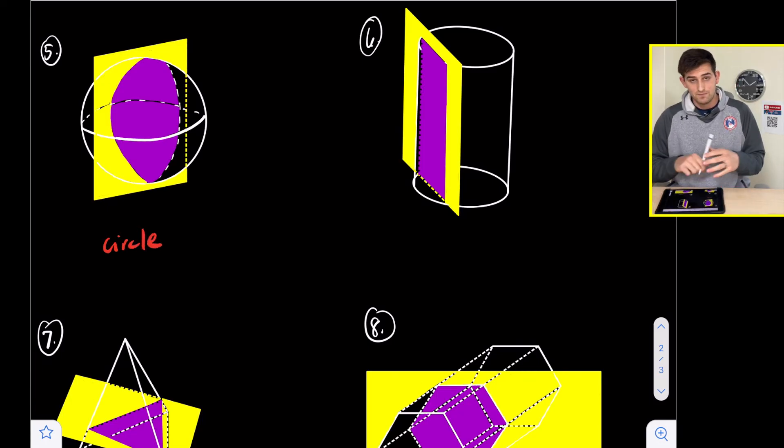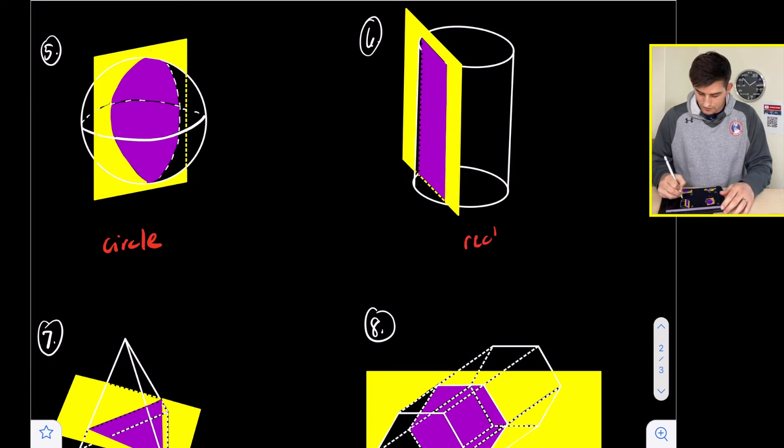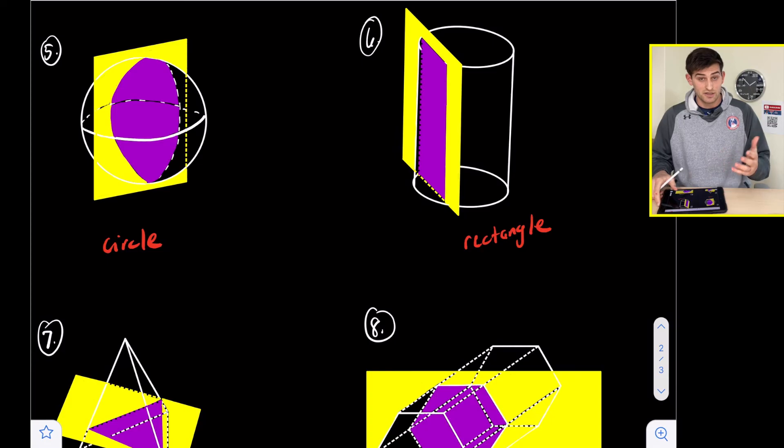Number six, we're starting with a cylinder, and we are slicing off an edge. So our cross section here is actually going to be a rectangle.